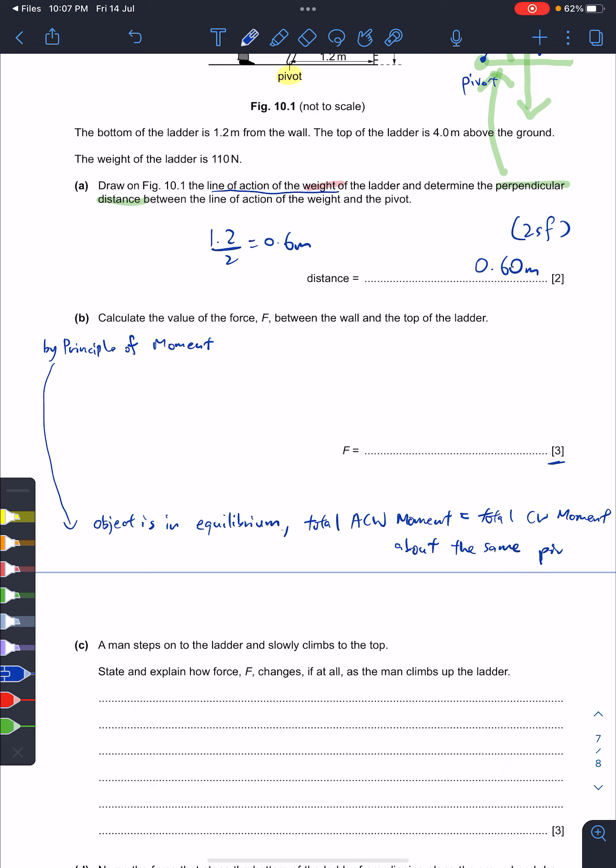This same pivot thing may not make too much sense to you because so far in combined science it's just one pivot, but it will make more sense if you take pure physics because in pure there are questions with double pivots. For simplicity, just remember that the total clockwise is equal to the anti-clockwise moment about the same pivot.